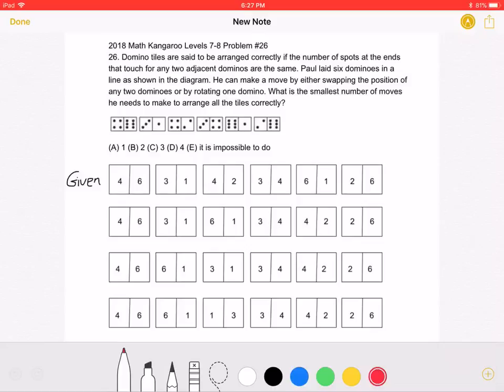Since I think it's a little bit hard to solve this problem using the dots, I replaced the dots with the number of them. So you can see we have 4, 6, 3, 1, 4, 2, 3, 4, 6, 1, and 2, 6.